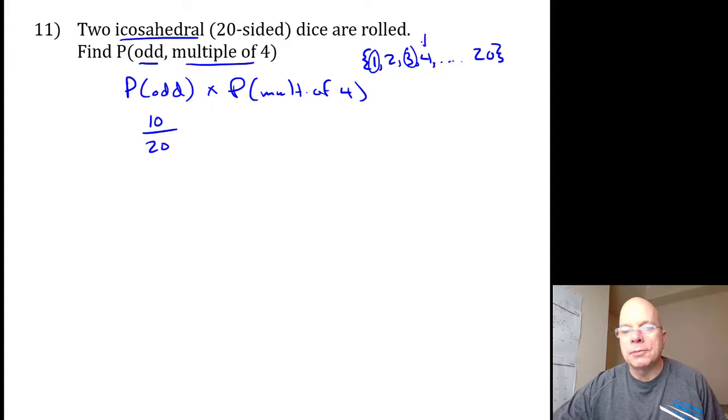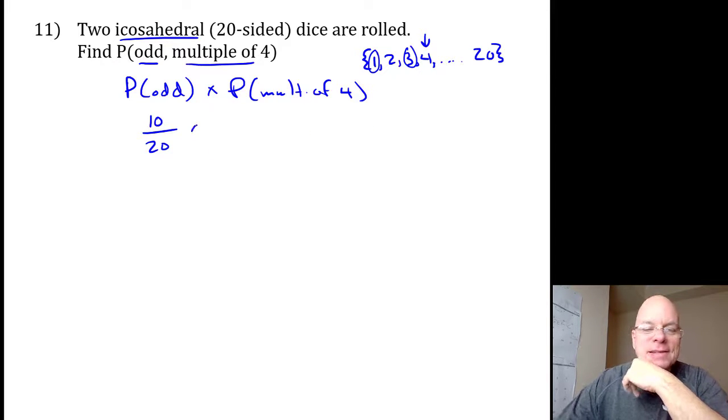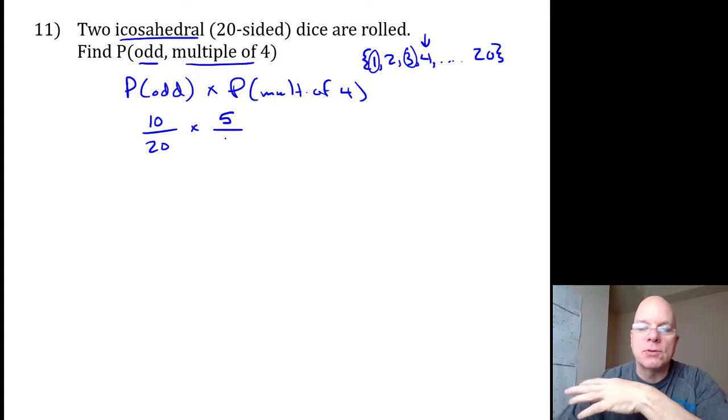Well, four is a multiple of four, eight, twelve, sixteen, and twenty. It makes sense that there would be five multiples of four—every fourth number out of twenty numbers. Twenty divided by four is five.